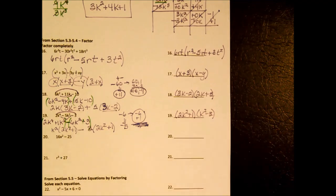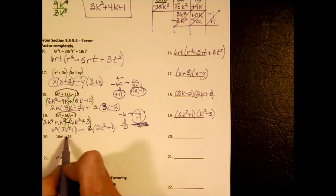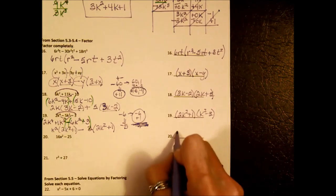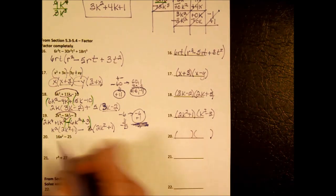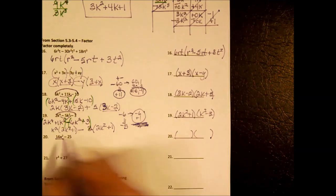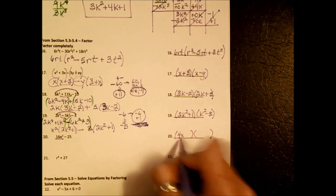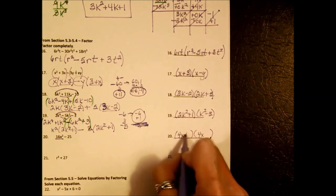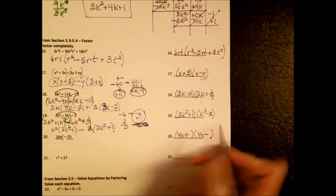The next one is easy — only two terms, it's a difference, and they're both perfect squares: difference of two squares. What got squared to make the first term? 4x. What got squared to make the second? 5. So the factors are (4x plus 5)(4x minus 5).